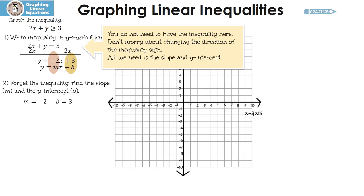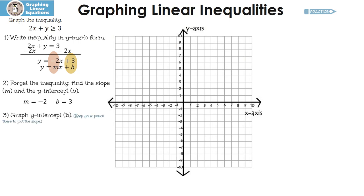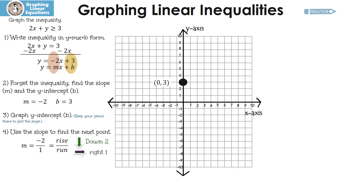Now it's the fun part. First, we have to graph our y-intercept, which is 3 — put your pencil there. Next, we figure out the slope: m is negative 2, written as a fraction, negative 2 over 1. That means rise over run — we're going to go down 2 and then run to the right 1. Down 2 and run 1, then down 2 and run 1 again. The next step is to decide: is it a solid or a dotted line? Since we have greater than or equal to, we're going to put in a solid line.